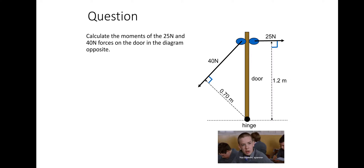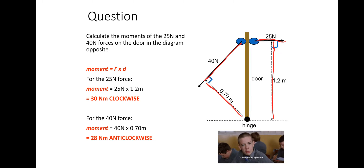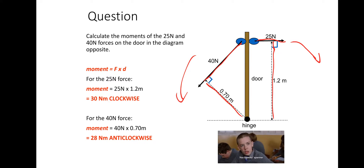So let's have a go at this question. Calculate the moments of the 25 newton and the 40 newton forces on the door in the diagram. As you can see, the force and the distance are perpendicular to each other in both cases. The 25 newton force is 25 times 1.2 meters, which gives 30 newton meters clockwise. And the 40 newton force is 40 times 0.7, which would be in the anticlockwise direction.